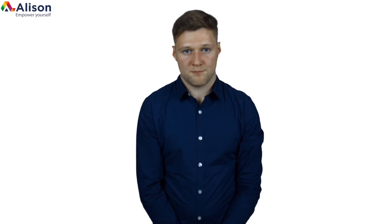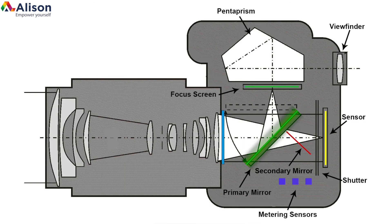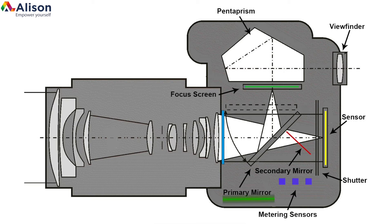Let us look at the mirrors within the camera. The mirror in front of the sensor needs to move up and out of the way to expose the sensor. There is also a secondary mirror behind the primary mirror. The primary mirror is responsible for sending light to the pentaprism and into the viewfinder, and it is slightly transparent, meaning that some light goes through it.